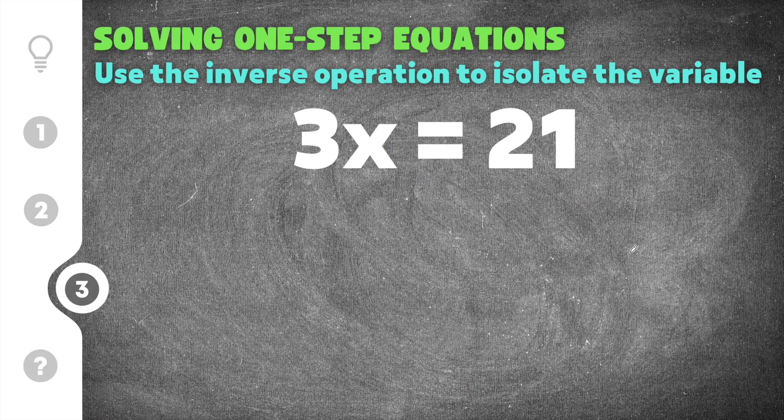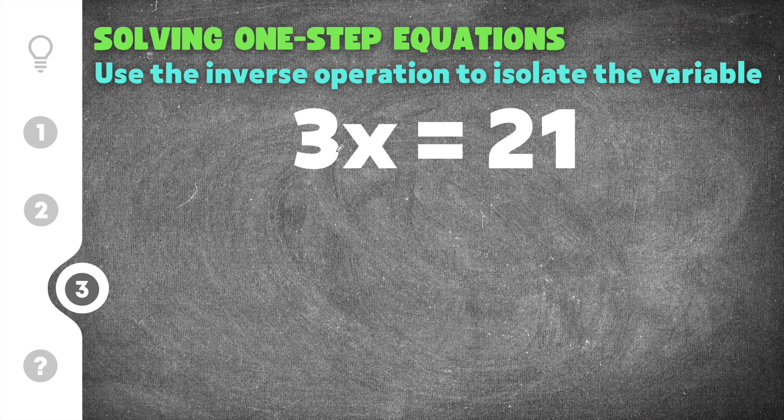Moving on to our last practice problem. This one gives us 3x equals 21. So this one-step equation has a coefficient next to the variable. When you have a coefficient next to the variable that means that they're being multiplied. So it's not written but there's a little multiplication symbol there. So this is like saying 3 times x equals 21.